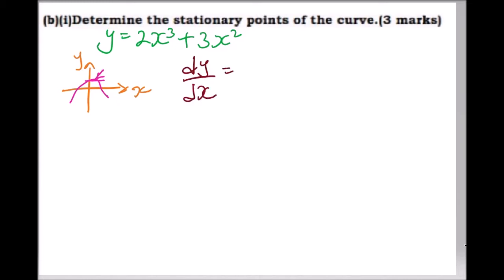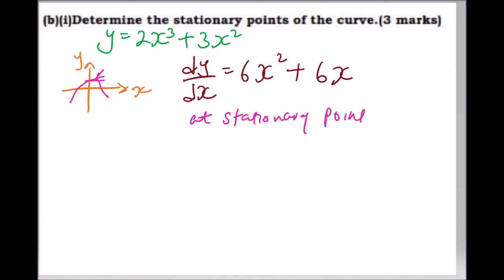Differentiating 2x cubed gives 6x squared, and differentiating 3x squared gives 6x. At a stationary point, dy/dx equals zero. Since this is a cubic function it has several turning points. So we set 6x squared plus 6x equals zero.